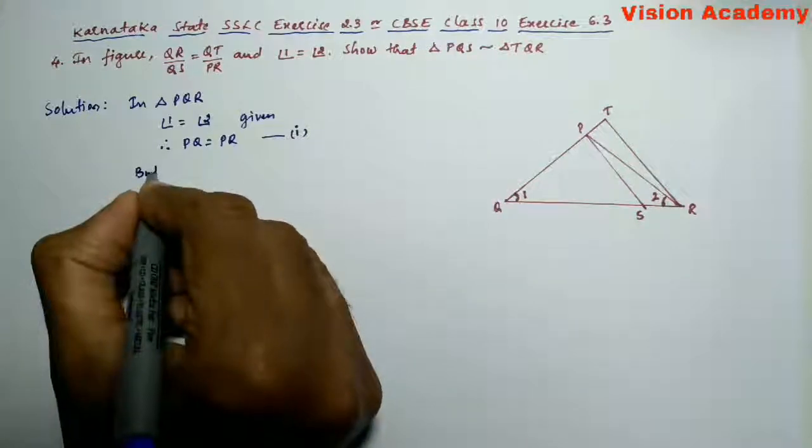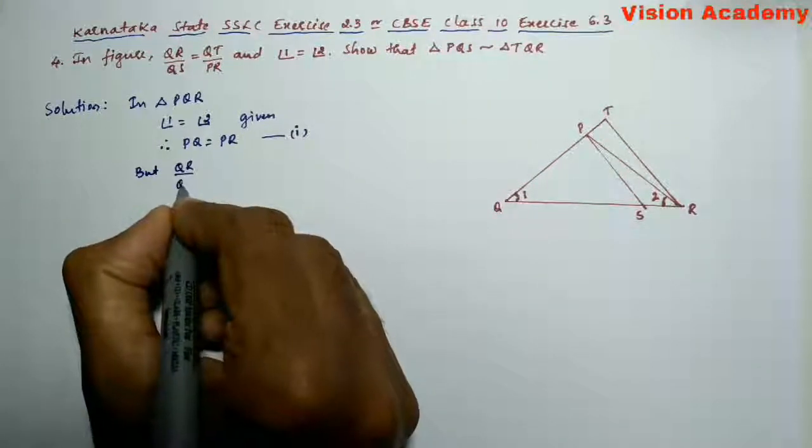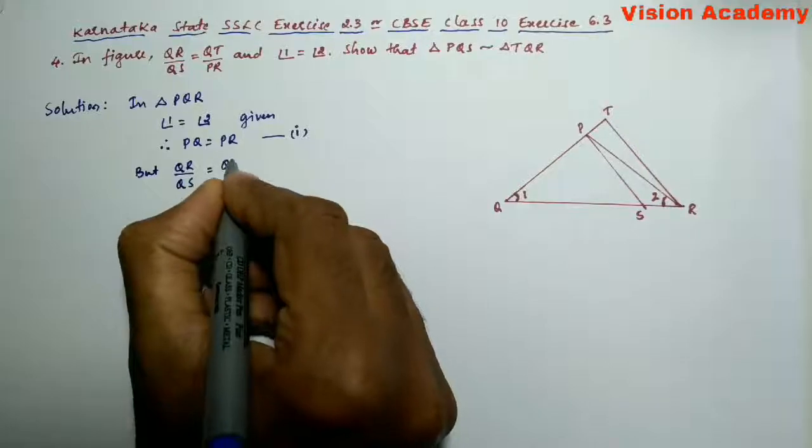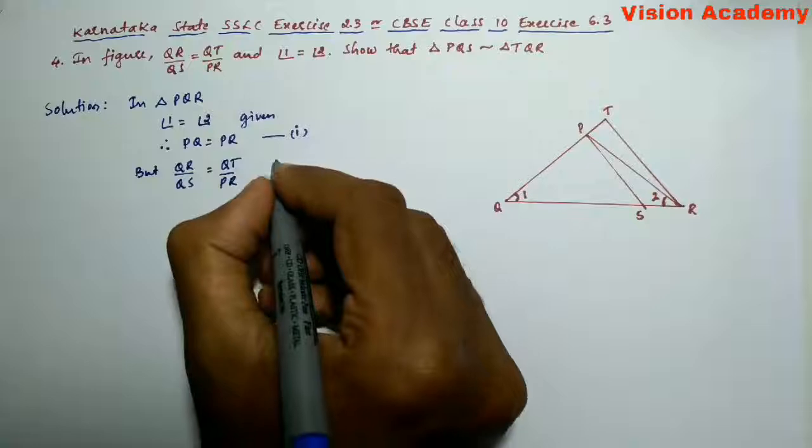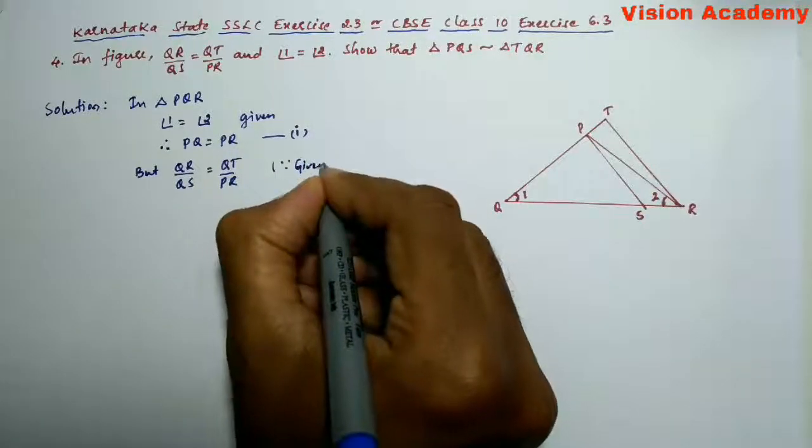But QR by QS is equal to QT by PR. So this is also given in the question.